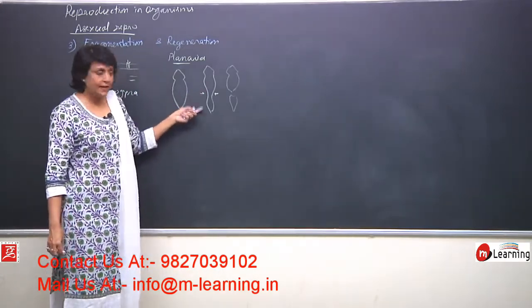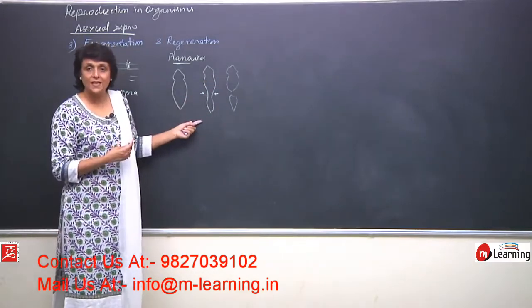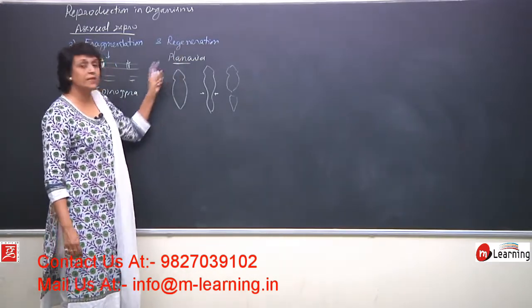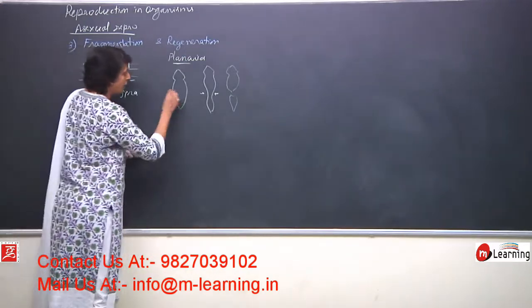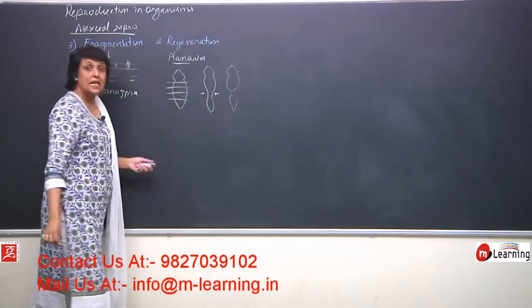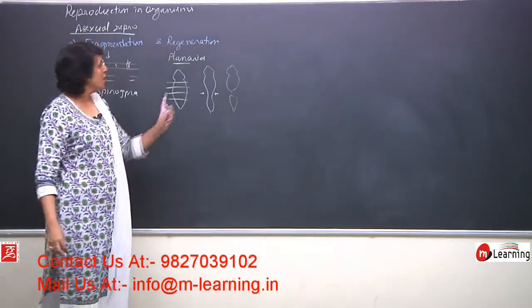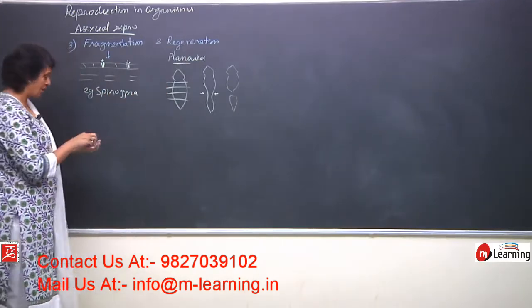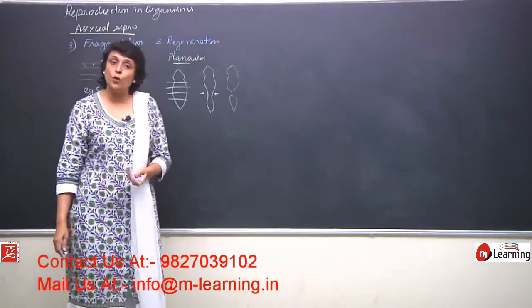Here Planaria undergoes splitting to produce two parts, which is similar to binary fission. But there is a power of regeneration present in lower organisms like sponges and Planaria. If a Planarian is cut into various parts, each part is capable of regenerating into a complete organism. That is the basic difference between fragmentation and regeneration. The next method of asexual reproduction is by spore formation.